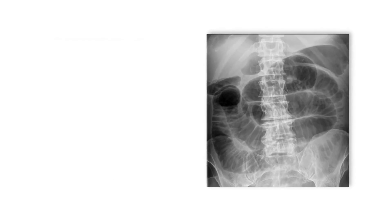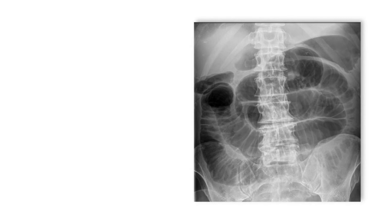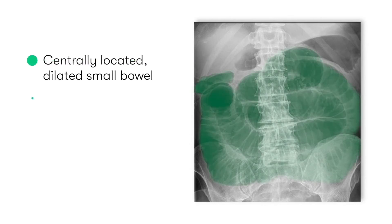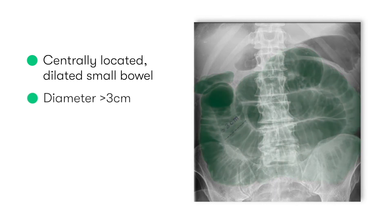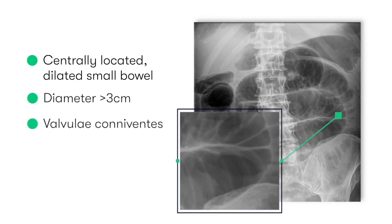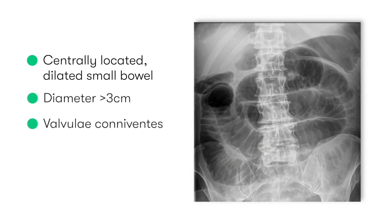Looking more closely, in abdominal x-rays of small bowel obstruction, the features we normally expect to see are centrally located dilated small bowel with a diameter of more than 3 cm. We can tell that these loops of bowel are in fact small bowel rather than large bowel due to the presence of valvulae conniventes, which are near-circumferential folds of mucosa visible as lines that traverse the diameter of the bowel. An additional feature that we may see on abdominal x-ray is the presence of fluid levels within the dilated small bowel loops.